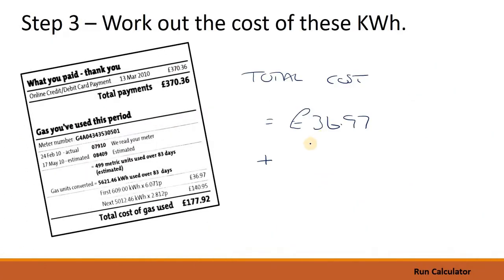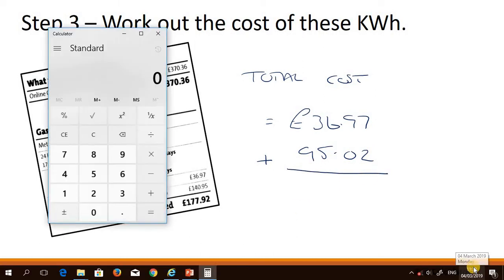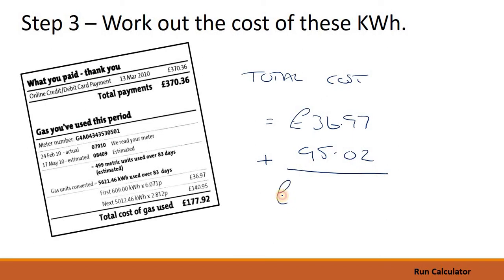Let's just get the calculator up again. Let's work that one out properly. 36 pounds and 97 pence plus 95 pounds and 2 pence is 131 pounds and 99 pence. And that is the total cost of the gas that we've used.